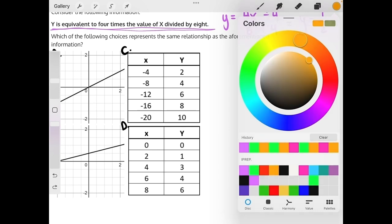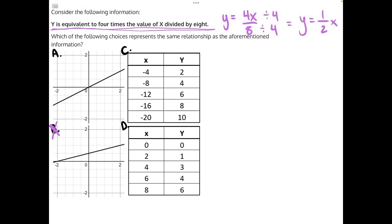I'm going to grab a new color. Let's start by plugging in some of our x values here to see if answer choice C is giving true outputs. So we'll have y equals 1 half x, and then we'll plug in all these x values. We'll have 1 half times negative 4, 1 half times negative 8, 1 half times negative 12, and so on.